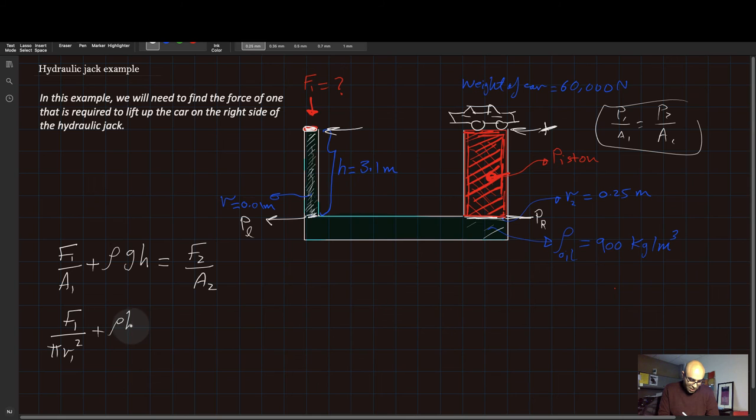This is equal to F2, which is the force coming from the weight of the truck or the car, 60,000 newtons, divided by A2, which is pi R2 squared.